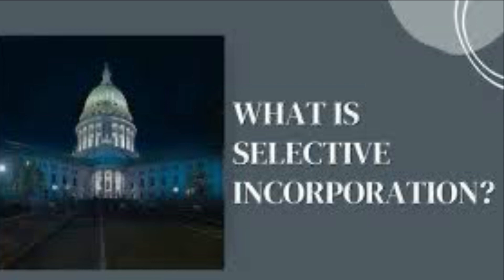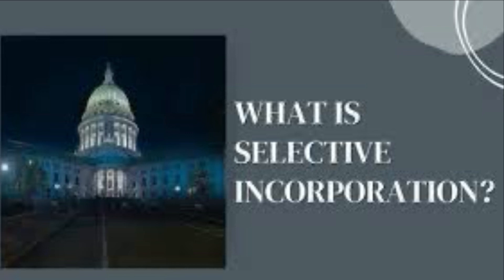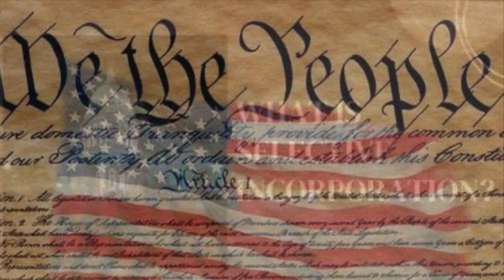There are two competing approaches: total incorporation — the idea that all Bill of Rights protections should apply to the states — and selective incorporation — the idea that only fundamental rights should be applied to the states on a case-by-case basis.